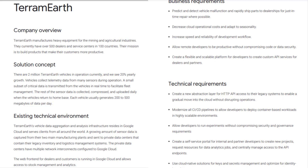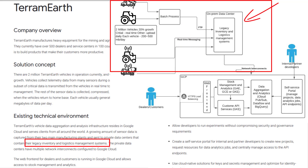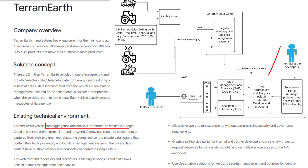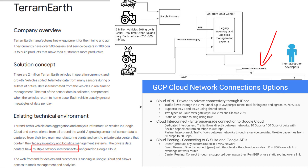Let's take a look at the existing environment and requirements. There are two types of vehicles that use either real-time messaging or batch processes to send data to legacy inventory and logistics management systems in on-prem data centers. The vehicle data aggregation and analysis infrastructure now resides in Google Cloud, using a combination of Cloud Pub/Sub, Cloud Dataflow, and Cloud BigQuery for data ingestion, data processing, and data analytics. The on-prem data centers have configured network interconnects between on-prem data centers and Google Cloud. You can check the details of network interconnects in the GCP network decision tree video.